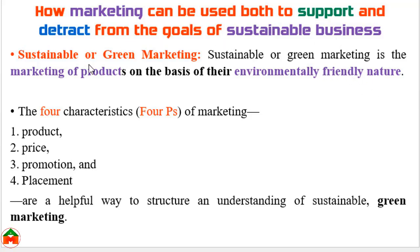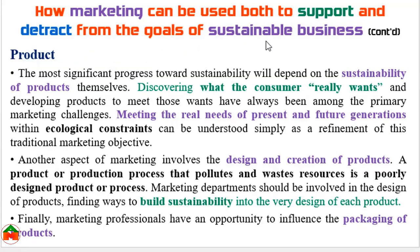Sustainable or green marketing is the marketing of products on the basis of their environmentally friendly nature. To ensure sustainability, by considering the four aspects — product, price, promotion, and placement — a company can ensure sustainable business through green marketing. To ensure a sustainable product, the company should discover the needs and wants of the customer, and if the company understands these needs it can design and create the desired products that build sustainability into the business.